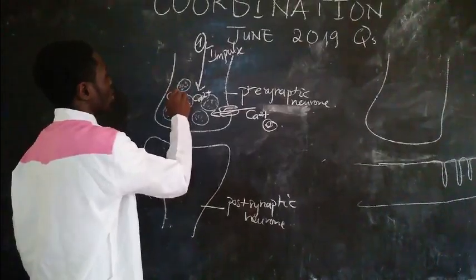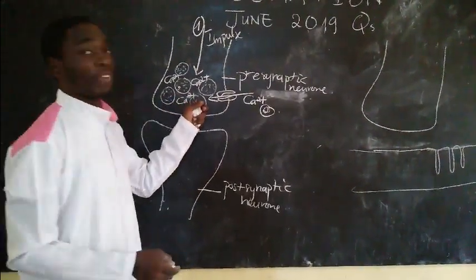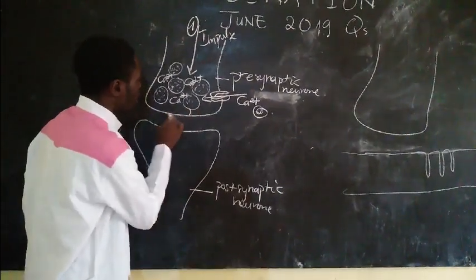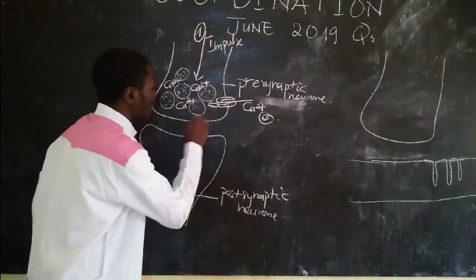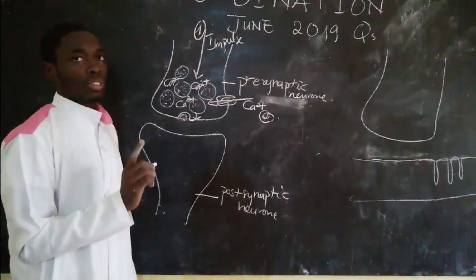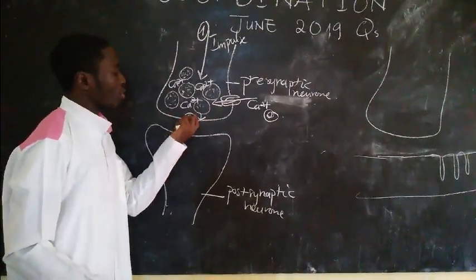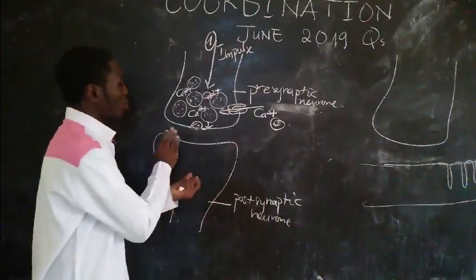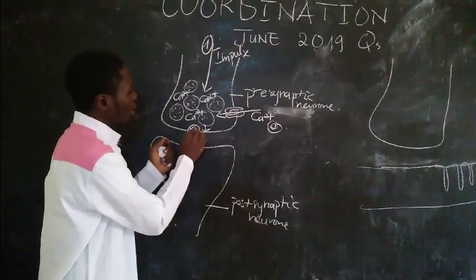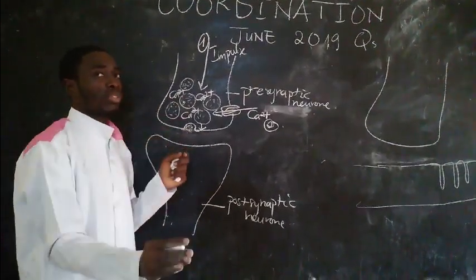The increased concentration of Ca2+ causes these vesicles to bind to the presynaptic membrane and fuse with it, releasing their neurotransmitter content — acetylcholine — into the synaptic cleft via the process of exocytosis. The synaptic cleft is the space between the presynaptic membrane and the postsynaptic membrane. This is stage 3.